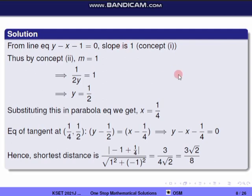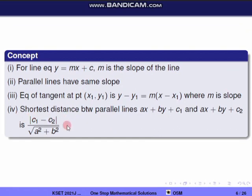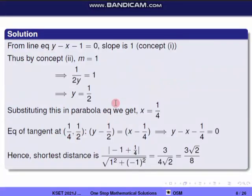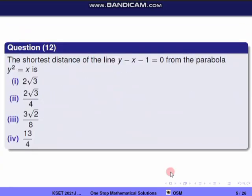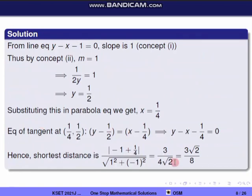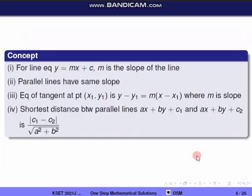The tangent and the given line are parallel. Using the shortest distance formula between the two parallel lines, with c₁ equal to minus 1 and c₂ equal to minus 1/4, a equal to 1, b equal to minus 1, we get the distance equal to 3/4 divided by root 2, which simplifies to 3√2 by 8. So the shortest distance is 3√2/8 and the correct option is the 3rd.